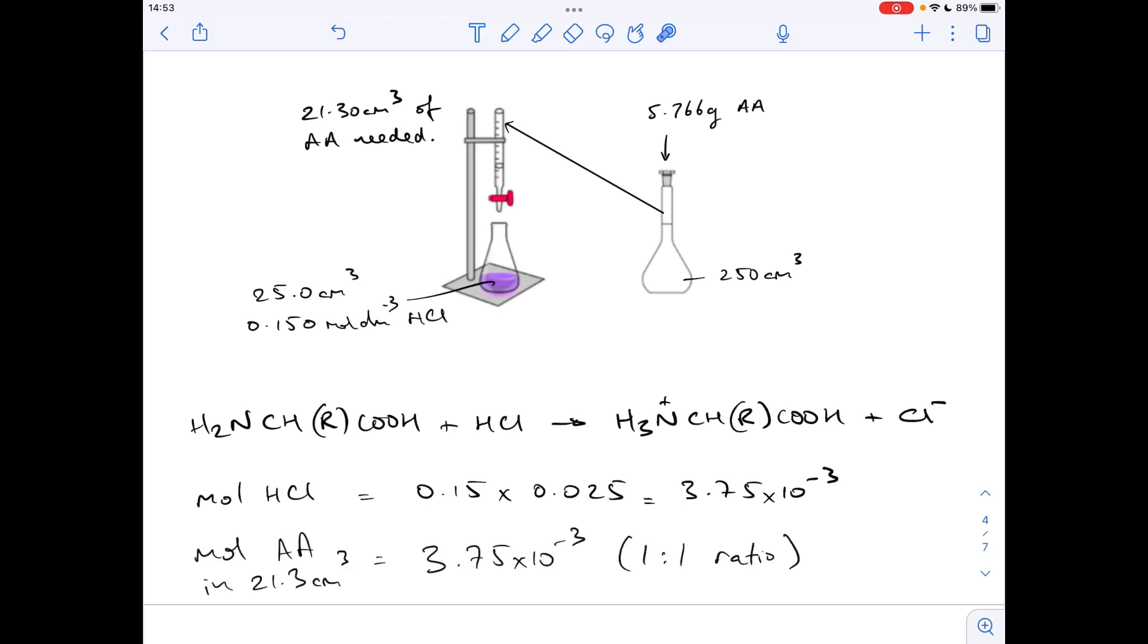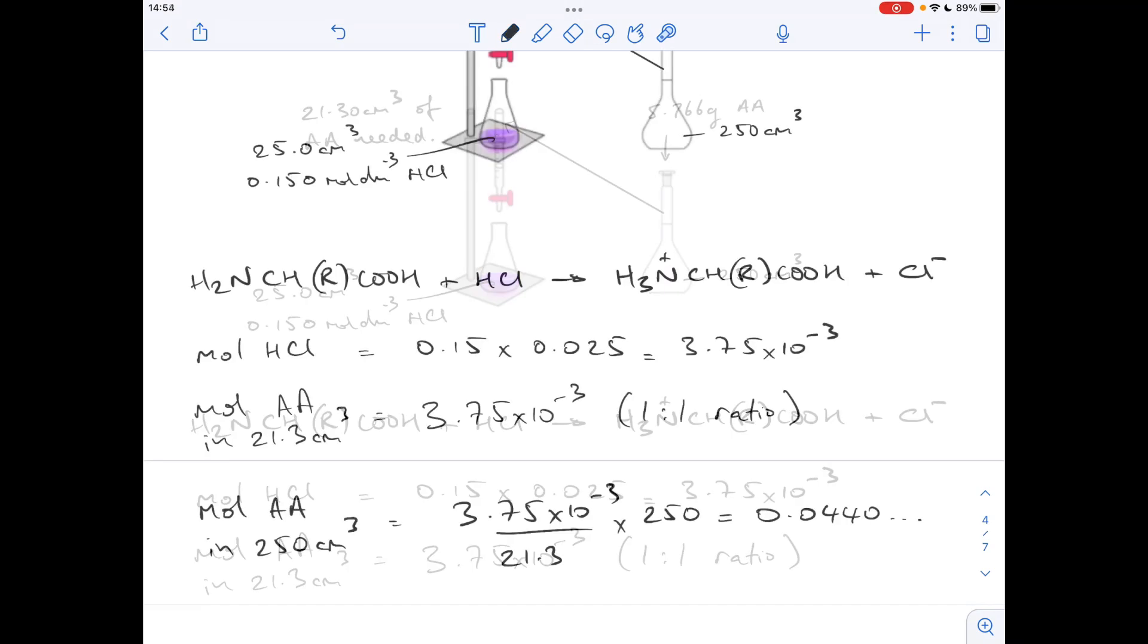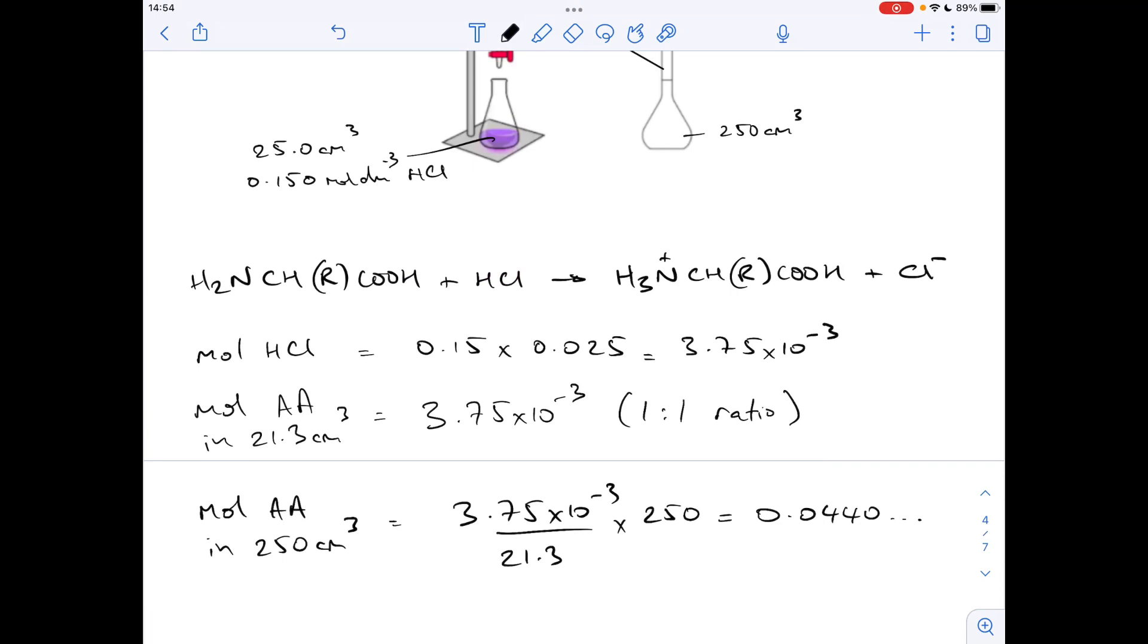Now we know the moles of amino acid in this volume, we want to know how many moles were in the original solution. The way we do that is divide the moles by the volume they were found in, 21.3, and then multiply by 250. It'll scale it up to how many moles were actually in there. You can see that's coming out at 0.440. I'm keeping the full number in the calculator.